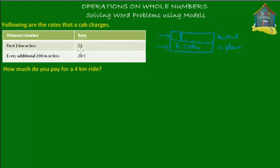As we just saw in the table, there's a relation between the distance you travel and the amount that is due to be paid to the taxi driver. This is how the payment works for this particular table. This is the rate that's given to you, and this is the distance traveled.